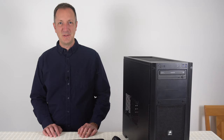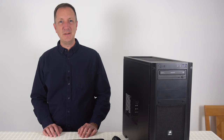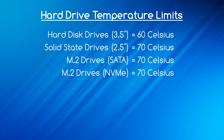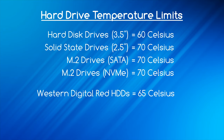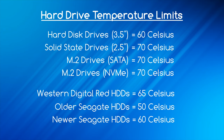Now let's look at hard drives as they can potentially overheat too. Most 3.5-inch hard disk drives have a temperature limit of 60 degrees Celsius, most 2.5-inch solid state drives have a limit of 70, and most M.2 drives do as well. There are some exceptions — for example some Western Digital Red hard disk drives can operate at up to 65°C, and some older Seagate drives had a limit of 50, though their newer drives also run at up to 60 degrees Celsius.